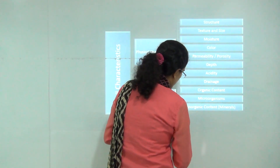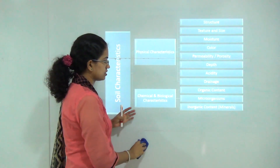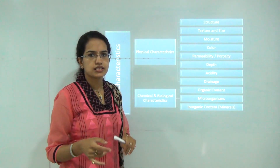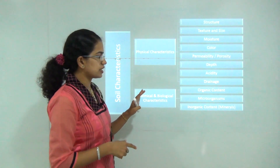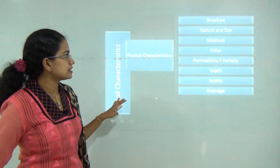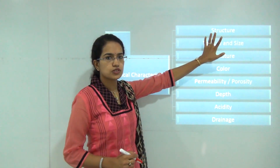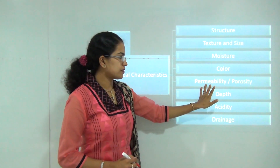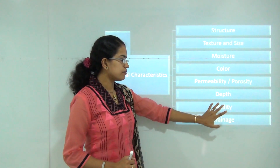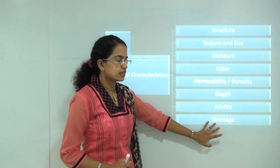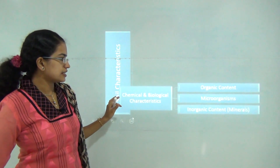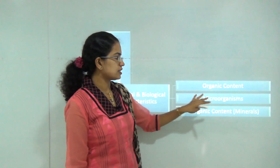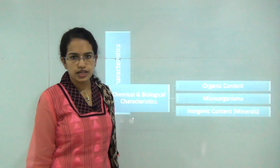Soil characteristics can be classified by three basic types: physical characteristics, chemical characteristics, and biological characteristics. Under physical characteristics we would be talking about structure, texture and size, moisture content, colour, permeability and porosity, depth, acidity, and drainage. Under chemical characteristics we would cover organic and inorganic content, and under biological characteristics we would discuss the effect of microorganisms in the soil.